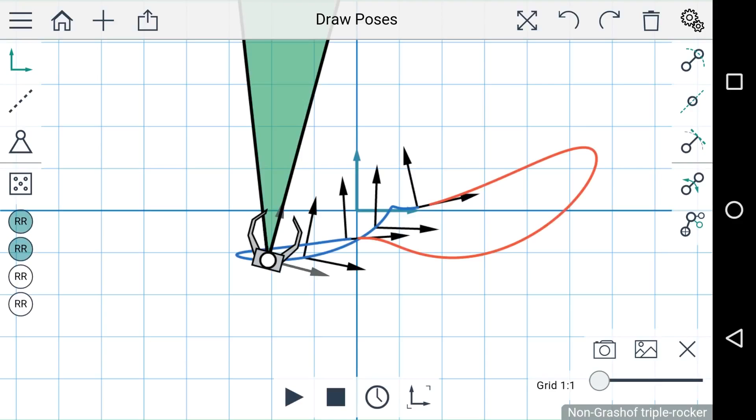Now you can see that once I've added the fifth constraint a linkage has been synthesized, and you'll notice that under the synthesis menu a few more buttons have appeared.